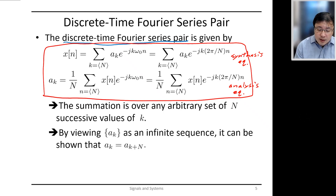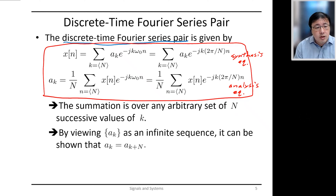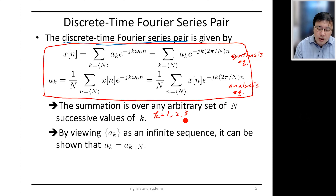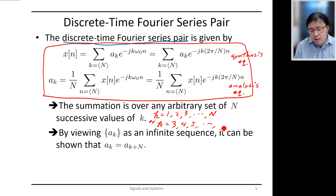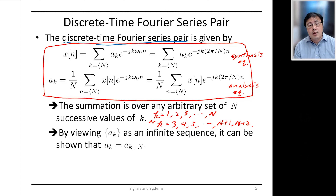The summation in the analysis equation is over any arbitrary set of capital N successive values of k. For example, you could sum k from 1 up to capital N, or you could sum k from 3 up to N plus 2. Summing over any N consecutive values is sufficient.